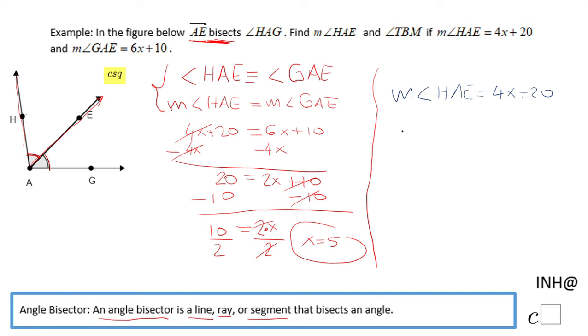So we have here 4 times 5 plus 20. 4 times 5 is 20, plus 20 is 40. The measure of angle HAE is 40 degrees.